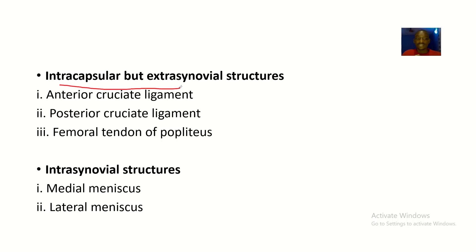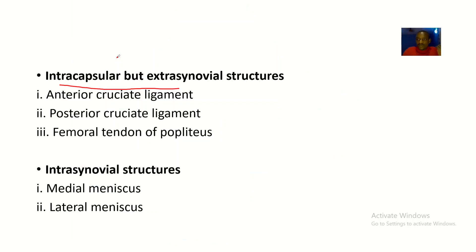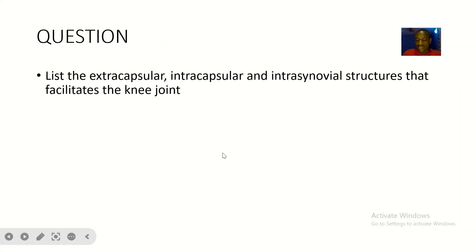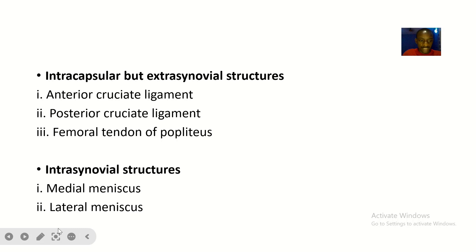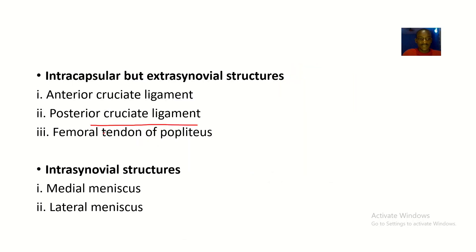Now we have the intra-capsular structures, which are intra-capsular but extra-synovial — inside the capsule but outside the synovial membrane. We have the anterior cruciate ligament, which can be seen here. Then we have the posterior cruciate ligament, shown here as well.